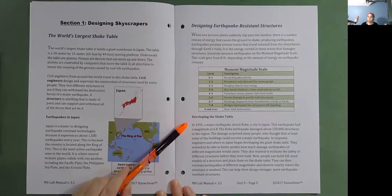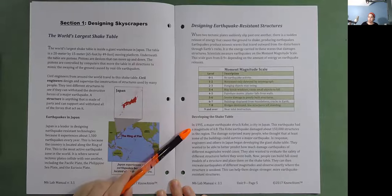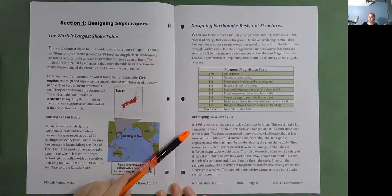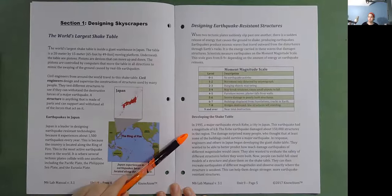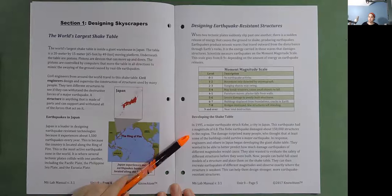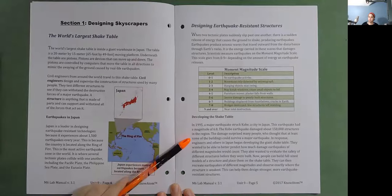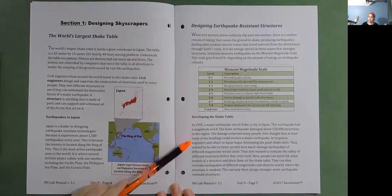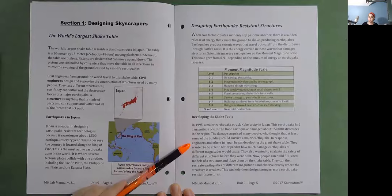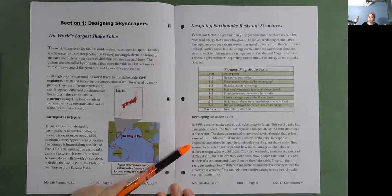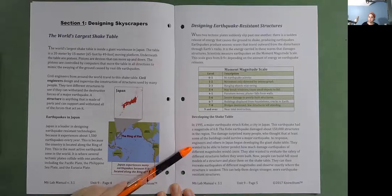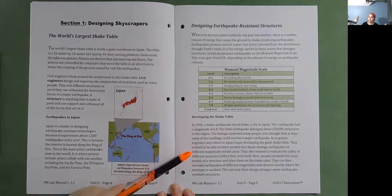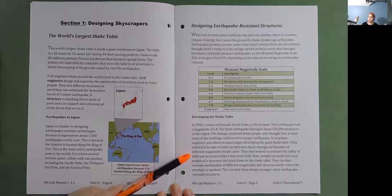Developing the Shake Table. In 1995, a major earthquake struck Kobe, a city in Japan. This earthquake had a magnitude of 6.8. The Kobe earthquake damaged about 150,000 structures in the region. The damage surprised many people, who thought that at least some of the buildings could survive a major earthquake. In response, engineers and others in Japan began developing the giant Shake Table. They wanted to be able to better predict how much damage earthquakes of different magnitudes would cause.